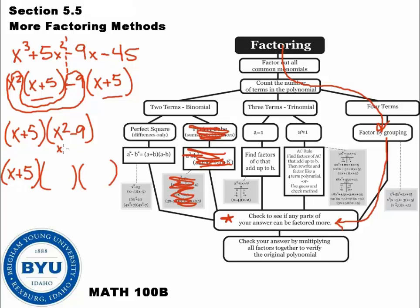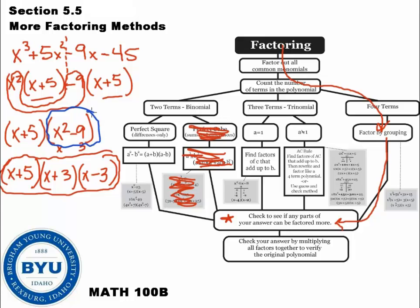We can take the square root of x squared, which is x, and the square root of 9 is 3. So I get x plus 3 and x minus 3. This is our final answer. It's important to remember that once you're done factoring, take a look at your answer and ask yourself: do any of these factor more? It turned out that x squared minus 9 did factor more using a two-term solution. The last step tells us that once we've factored, we can simply multiply all of our factors together using distribution to get back the original polynomial.